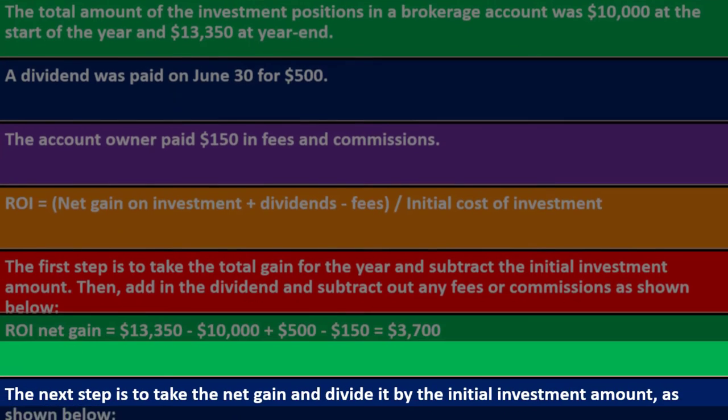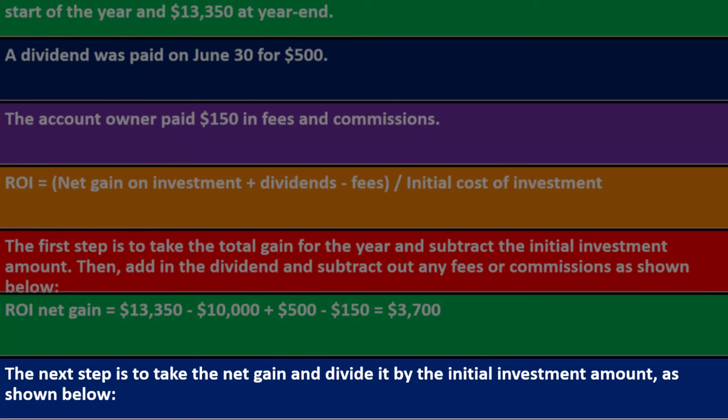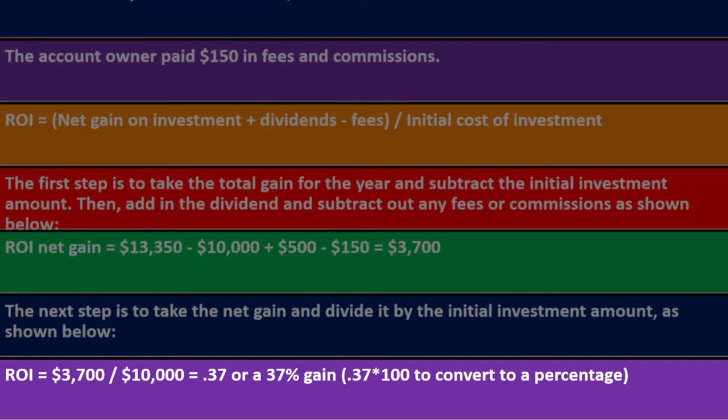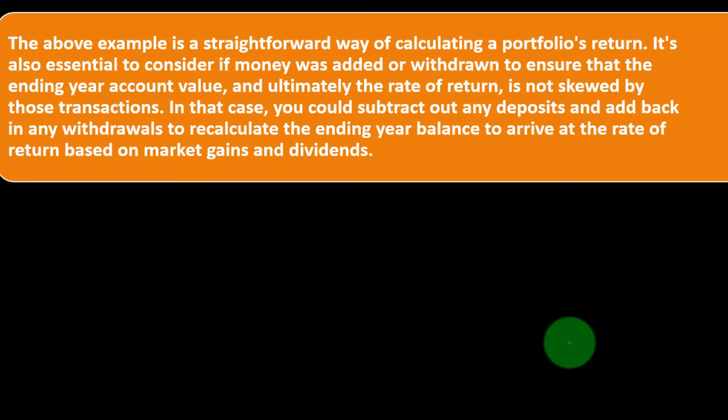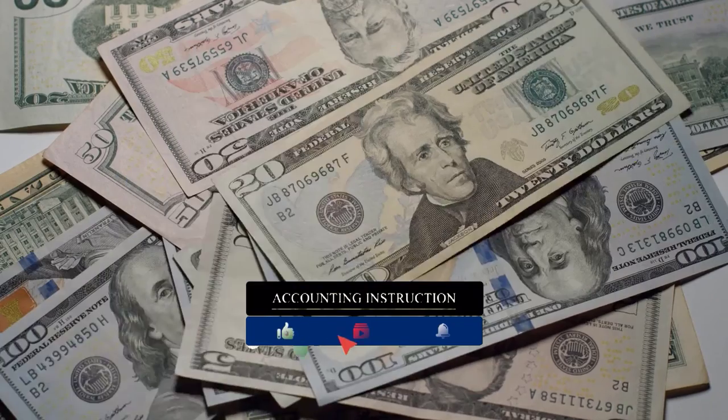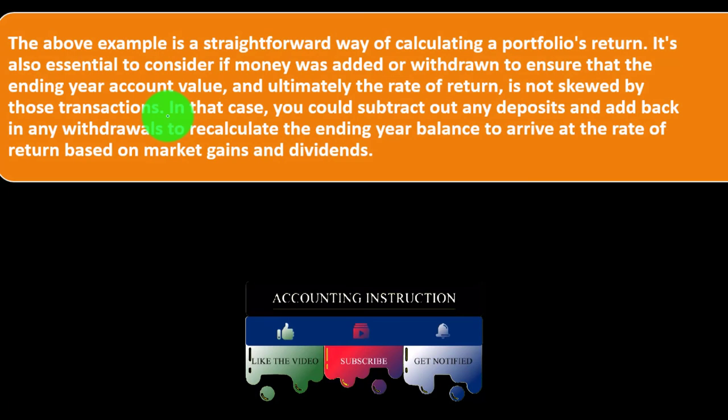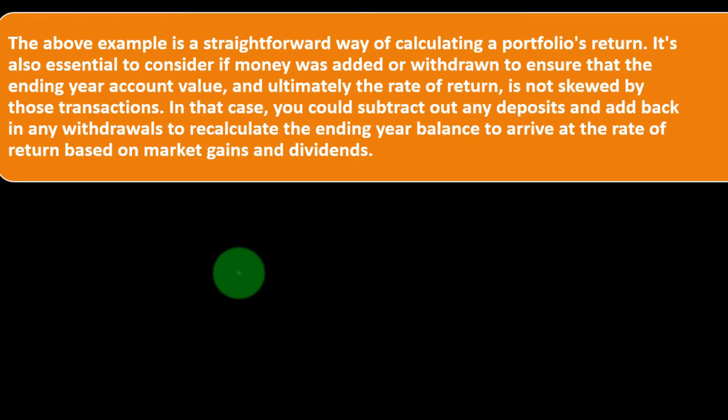ROI net gain: we got $13,350, that's the year-end amount, minus the $10,000 which was the cost, plus we had $500 coming in from the dividend, minus the $150 in fees. That gives us $3,700. The next step is to take the net gain and divide it by the initial investment amount. The ROI is $3,700 divided by the cost of $10,000, which equals 0.37 or a 37% gain. The above example is a straightforward way of calculating a portfolio's return. It's also essential to consider if money was added or withdrawn to ensure that the ending year account value and ultimately the rate of return is not skewed by those transactions.